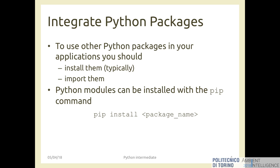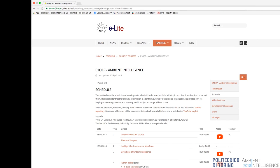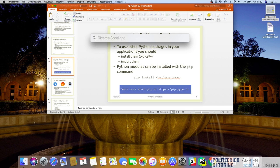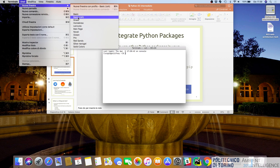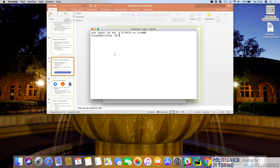In Python, to integrate other packages, you typically have to install them on your computer and then import them in your application. Python modules can be installed outside the PyCharm IDE with the pip command — 'pip install name_of_the_package'. On the command line you can write 'pip' or 'pip3' and 'install' followed by the name of a Python package to install.